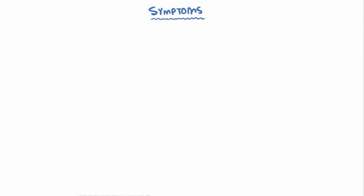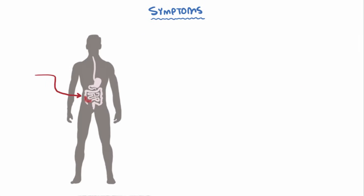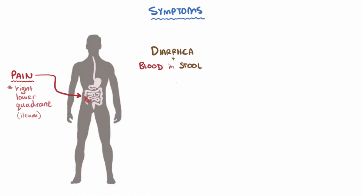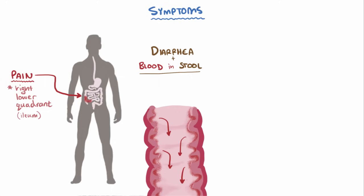As more gastrointestinal tissue is damaged, patients might experience pain in the affected areas, most commonly in the right lower quadrant, which is associated with the ileum. Also, diarrhea and blood in the stool are common symptoms. The blood is from damaged intestinal wall tissue, and if the cells in the large intestine are damaged, they lose their ability to reabsorb water, and more water is then excreted, leading to diarrhea.